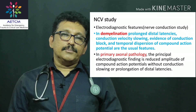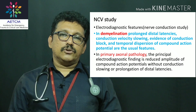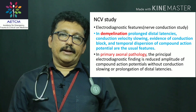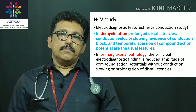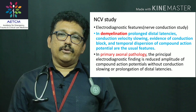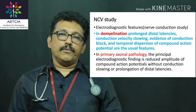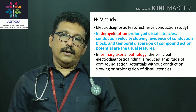Once GBS is suspected, a nerve conduction study should be performed. There are two types of GBS: demyelinating type and axonal neuropathy — both diagnosed by NCV. Demyelination is the major variety. Nerve conduction study in demyelinating GBS shows prolonged distal latencies, conduction velocity slowing, evidence of conduction block, and temporal disruption of the compound action potential. Some patients present with the axonal variety of nerve injury.